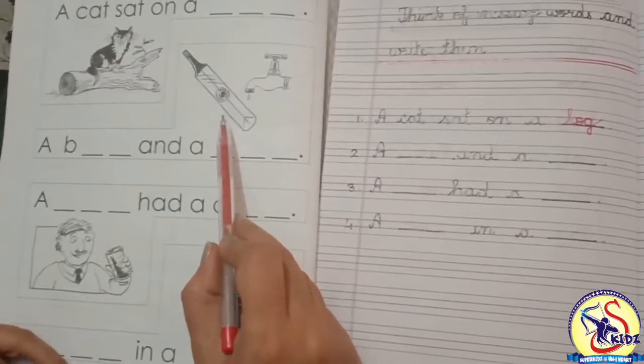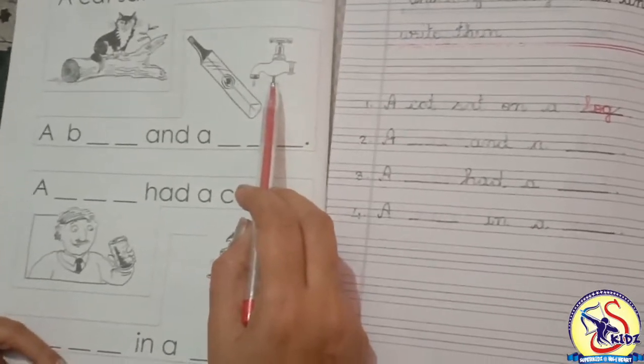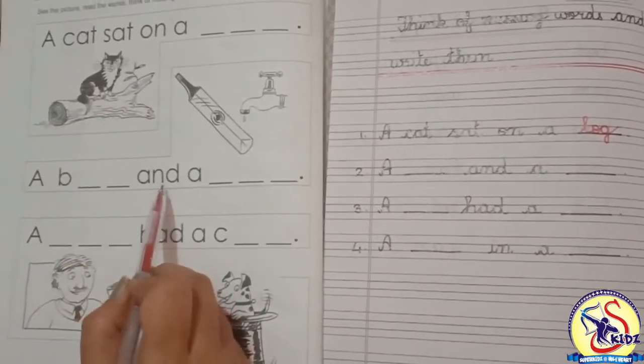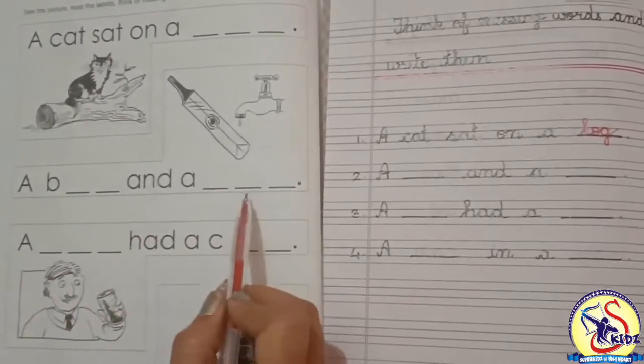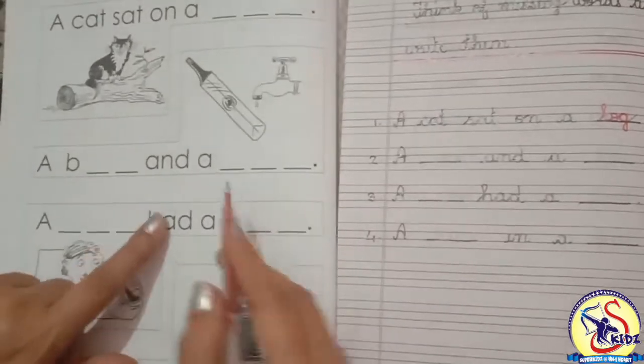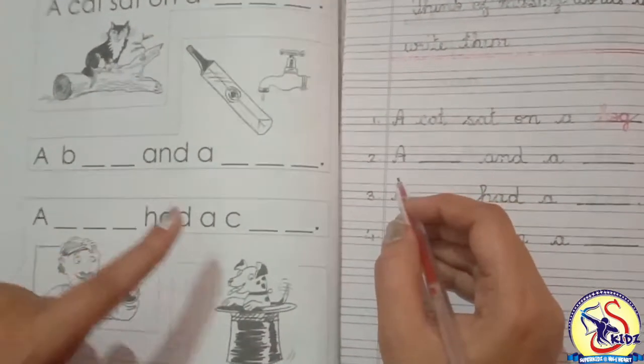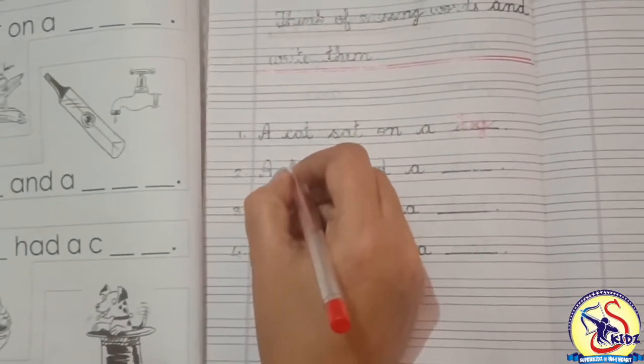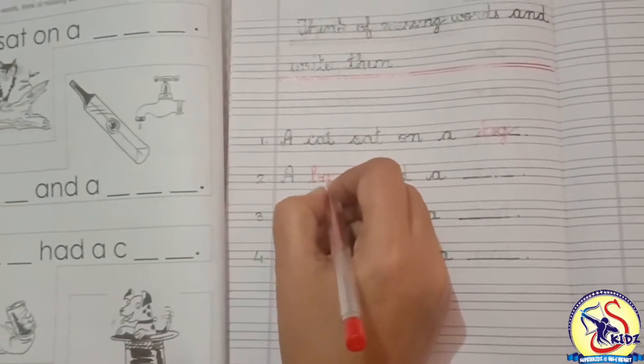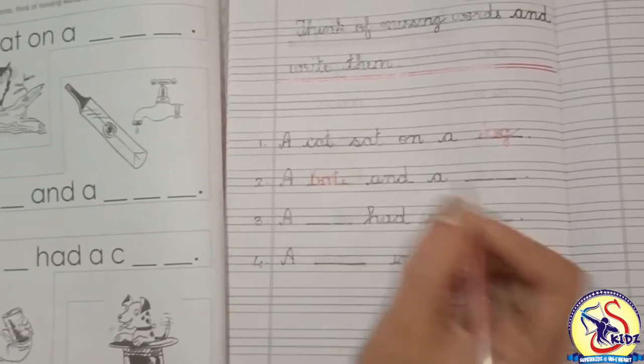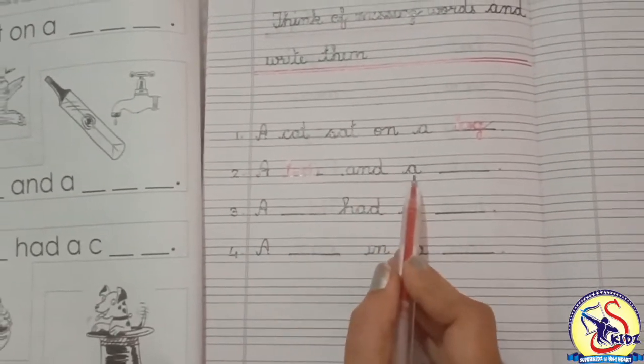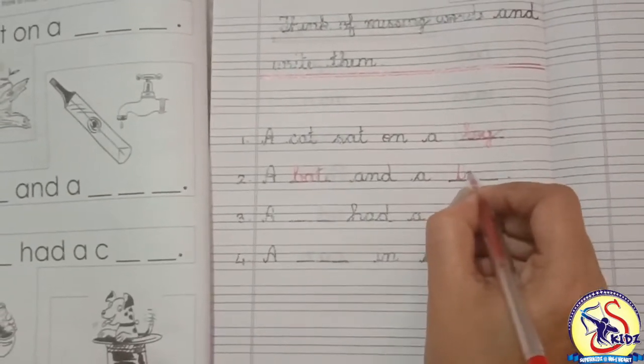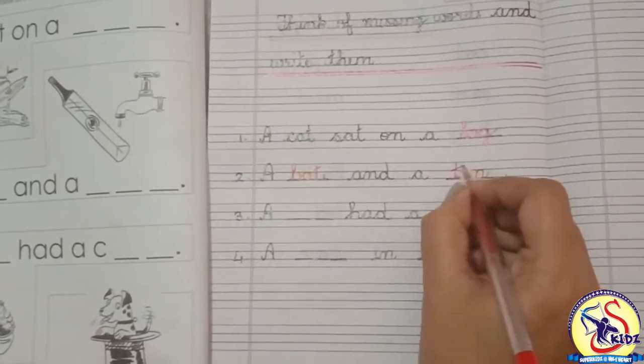picture of a bat and a tap. Now read the words: A blank and a blank. Now we are going to fill the missing words. The missing words are a bat and a tap. A bat, B-A-T bat, and a tap, T-A-P tap.